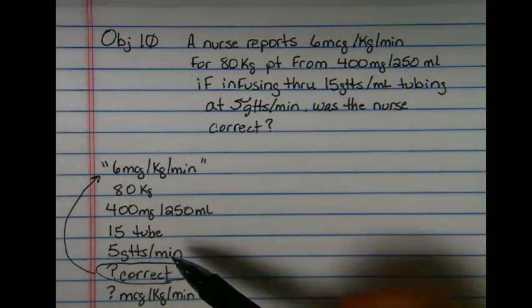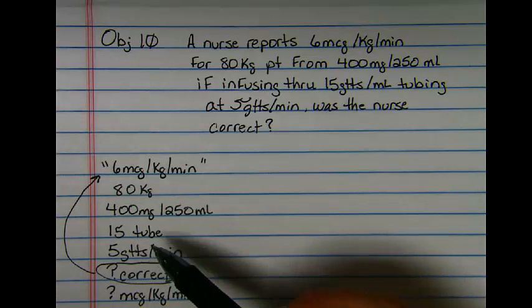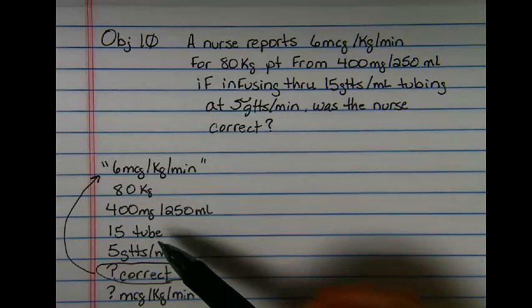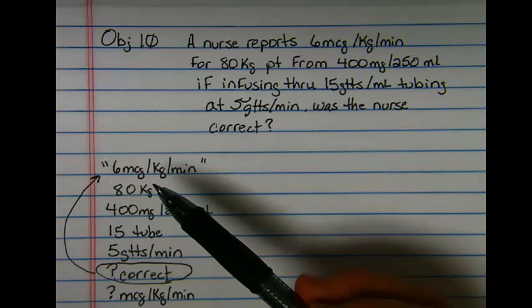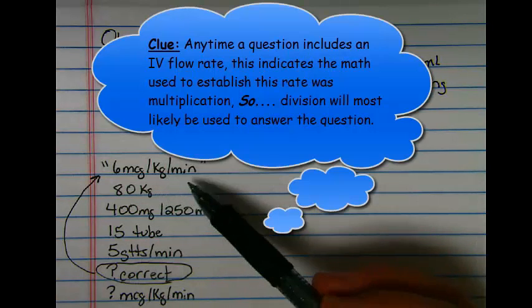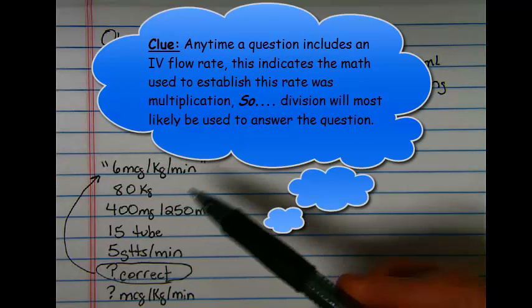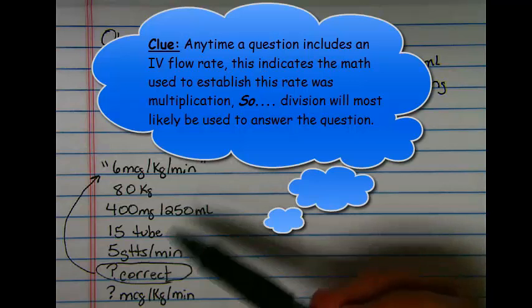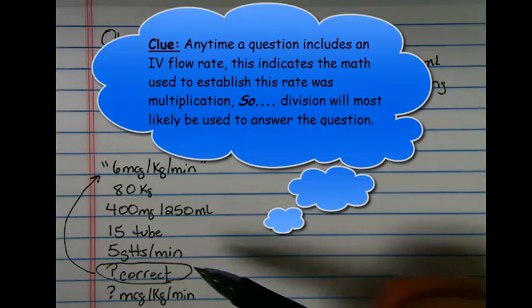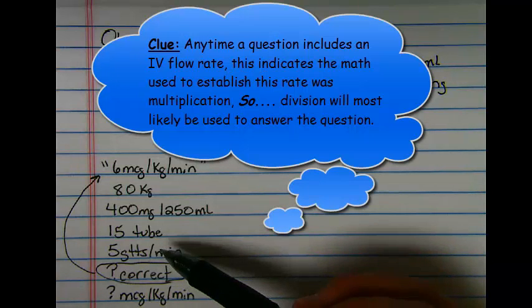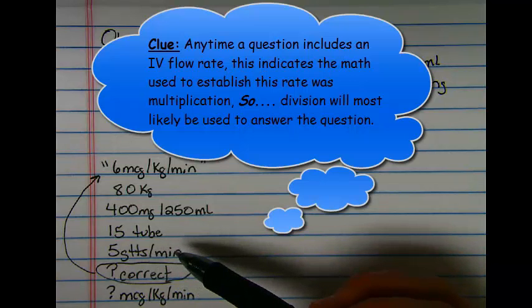Because this is flowing, this is an indication that someone, when setting up and establishing this flow rate, multiplied to do so. They took the order, they multiplied in the weight, they multiplied in the time. So if we're verifying this, we are backing out of that information because it's flowing. And this is kind of a hidden clue to let you know that your math that you're going to use is going to be division.